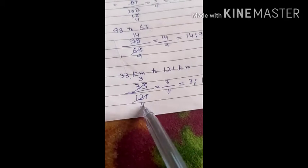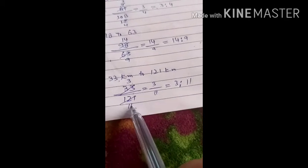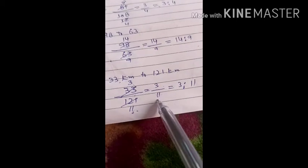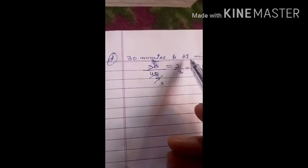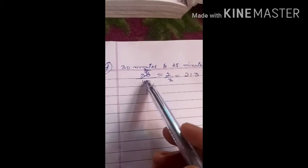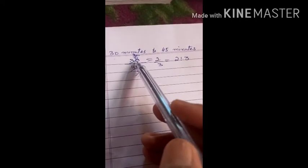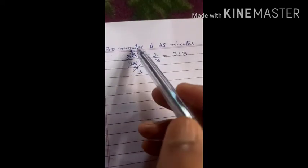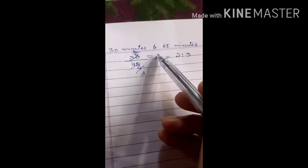Next is 33 kilometers to 102 kilometers. 33 divided by 121: dividing by 11 gives us 3 divided by 11, that is 3 is to 11. Next one is 30 minutes to 45 minutes. 30 divided by 45, dividing by 5 gives us 6 and 9, then dividing by 3 gives us 2 by 3, ratio 2 is to 3.